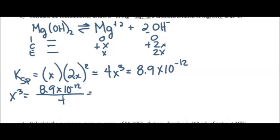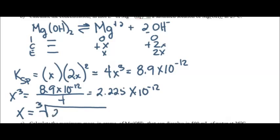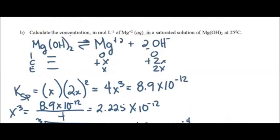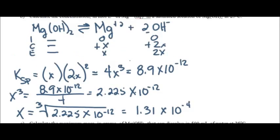Take the cube root of 2.225 × 10⁻¹² to find x. That gives x ≈ 1.31 × 10⁻⁴. We are looking for the concentration of magnesium ions, and magnesium equals x, so the magnesium concentration is 1.31 × 10⁻⁴ M. Not too bad — pretty straightforward.